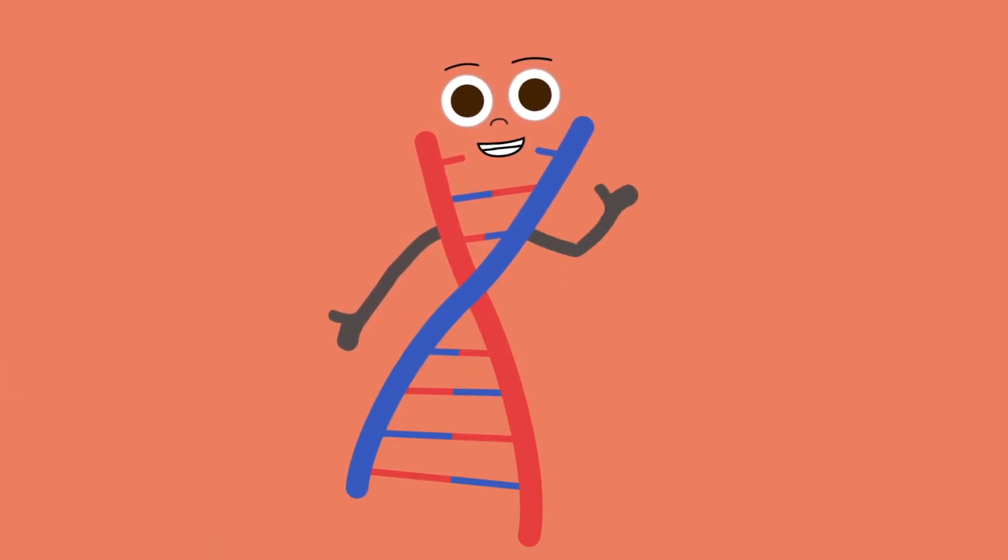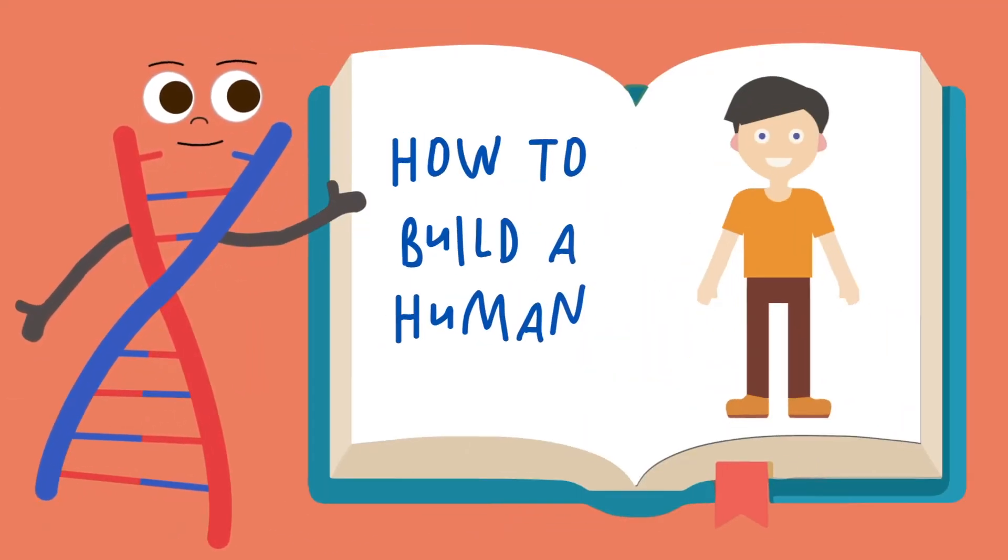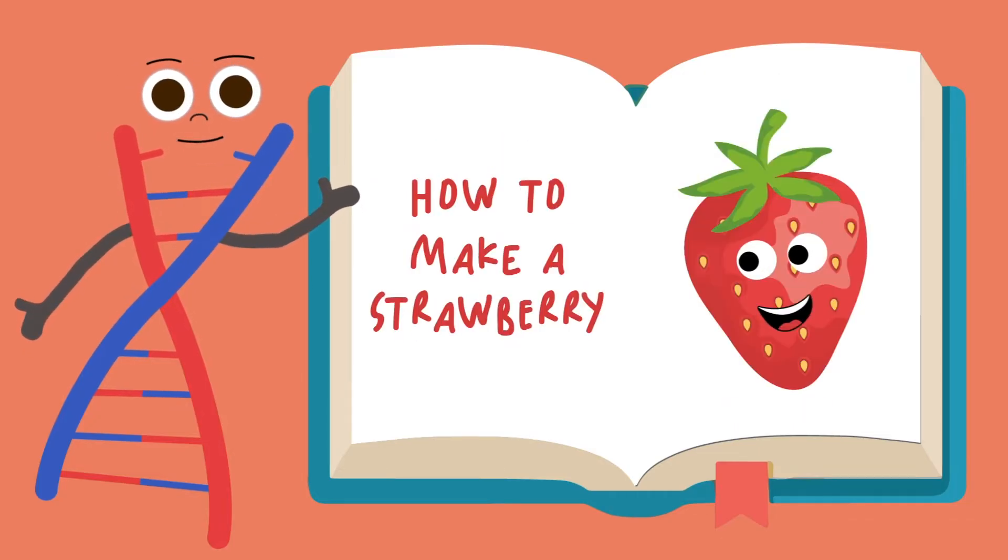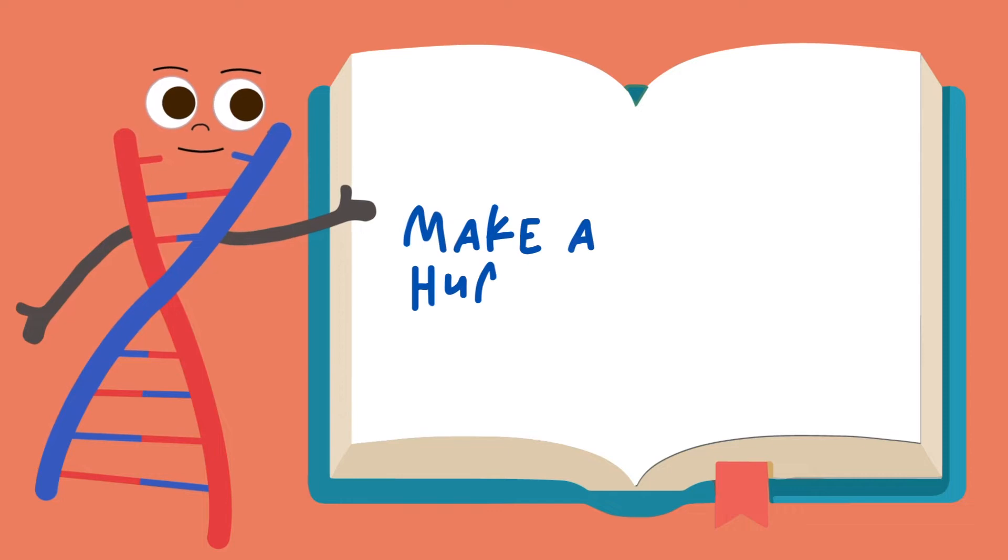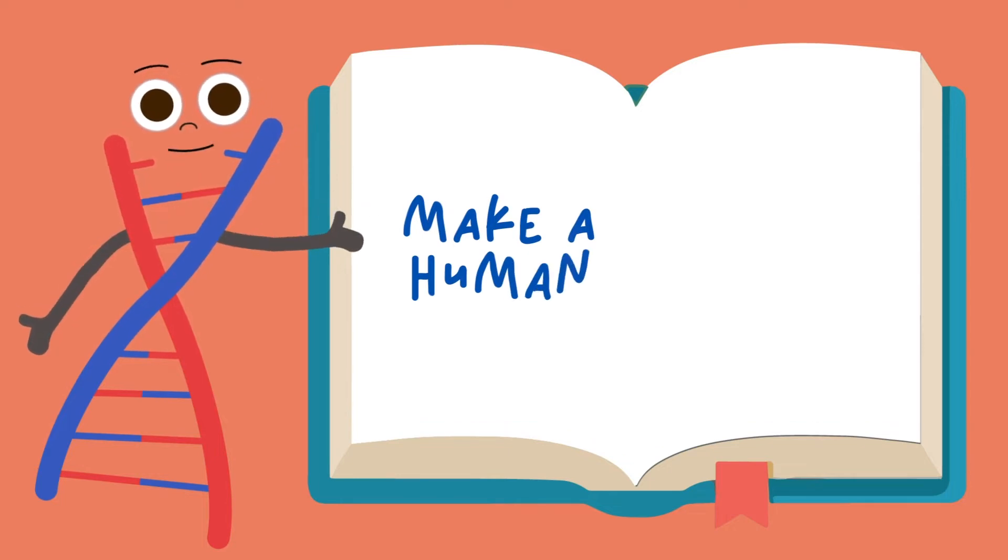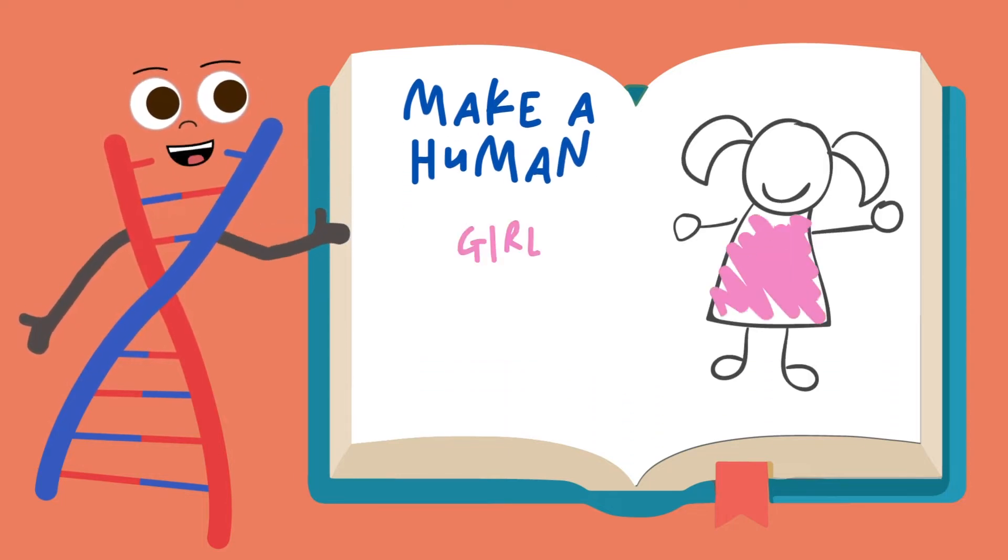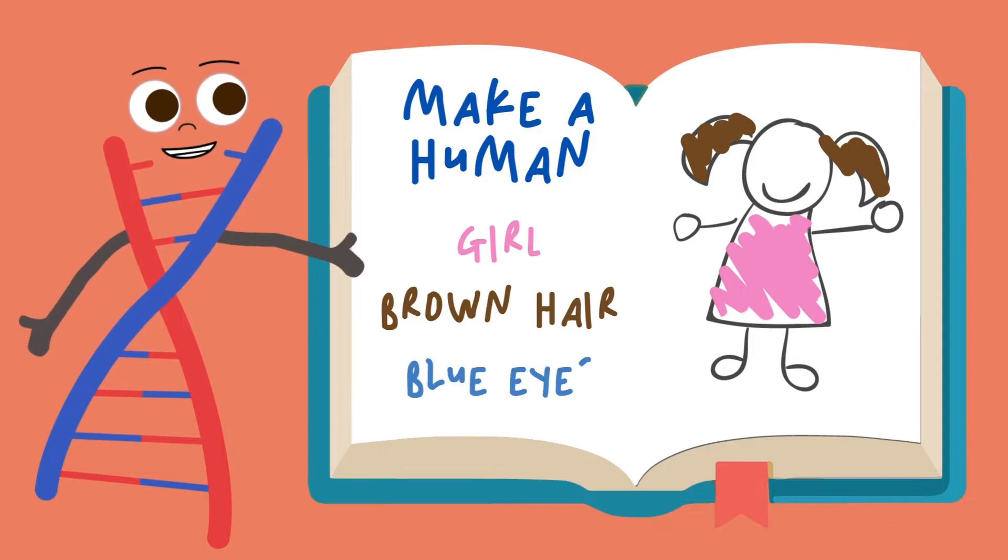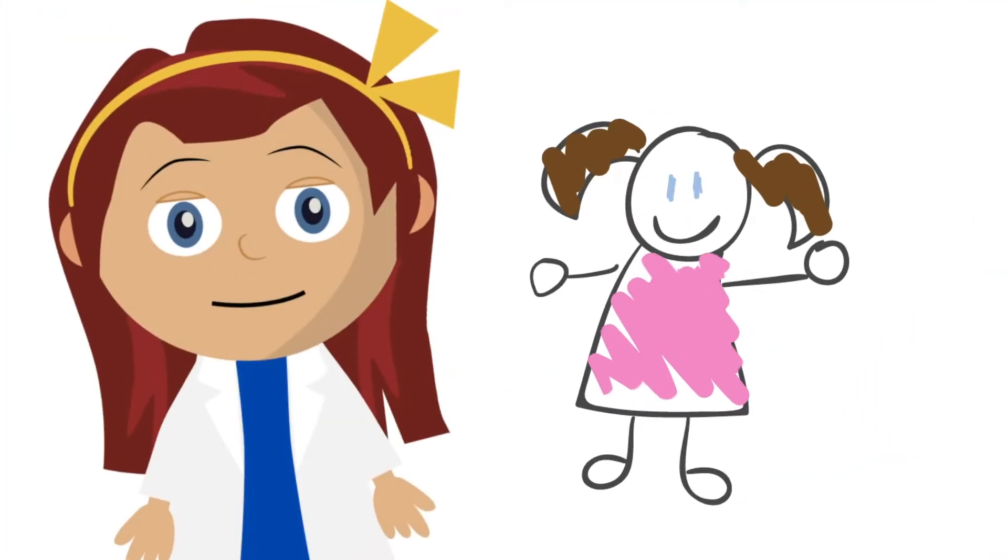I make you you. I'm instructions. Some DNA instructions say make a strawberry, and some say make a human. Your DNA might say make a human girl with brown hair and blue eyes. Amazing!